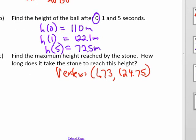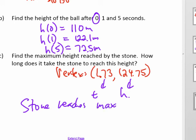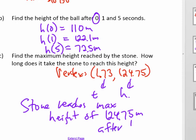And we need to answer the question. Not just put it in coordinate form. This is the time. And this is the height. So the stone reaches a maximum height of 124.75 meters after 1.73 seconds in the air.